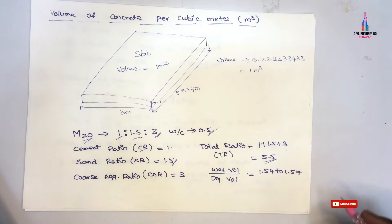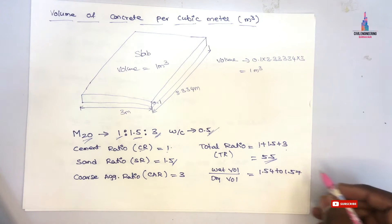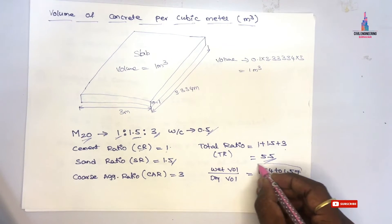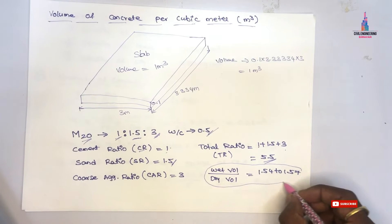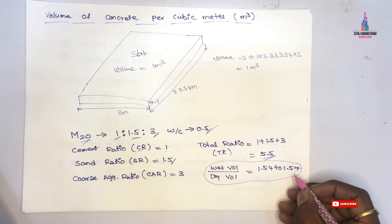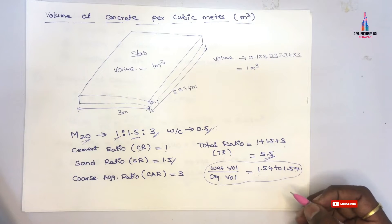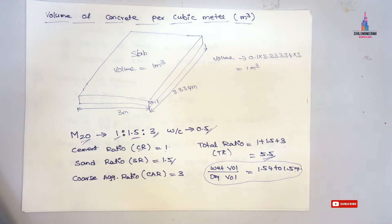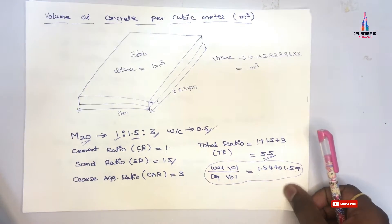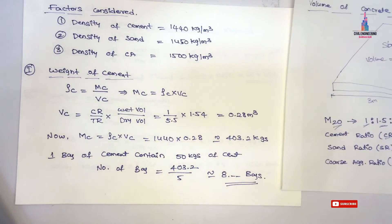Before proceeding to the volume of concrete per cubic meter, we need to know the conversion from wet concrete volume to dry volume. Generally, the concrete volume from wet to dry condition varies between 1.4 to 1.57, depending upon the material properties. I will now explain how to calculate the weight of cement, sand, and coarse aggregate.